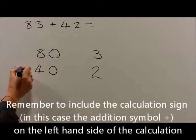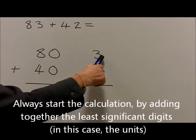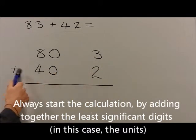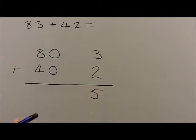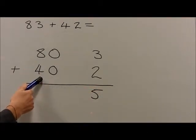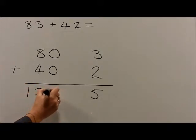These two are added together, first starting with the units, where 3 plus 2 is equal to 5. Then 8 tens, 80, plus 4 tens, 40, are added together to give 12 tens, which are 120.